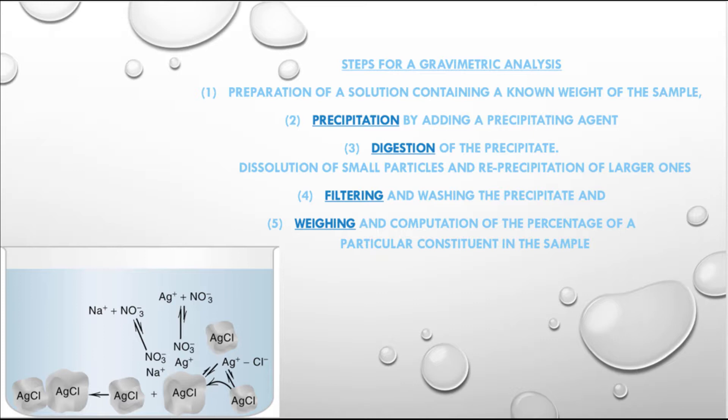Unknown G is an impure sample of sodium chloride. Your task is to determine the percentage chloride in your sample. To accomplish this task, you will be reacting the sodium chloride with silver nitrate,